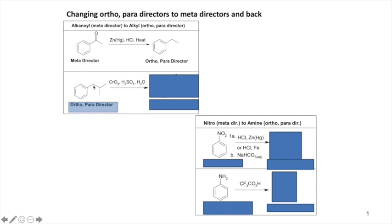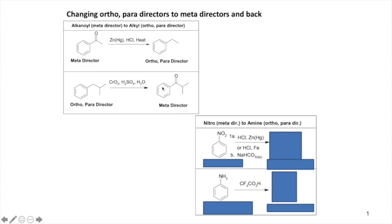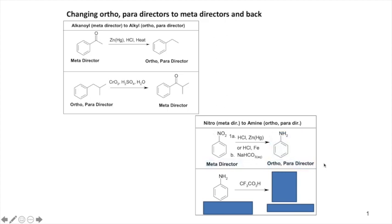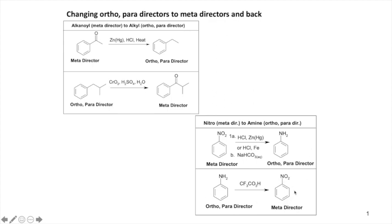You can reverse this: take the alkyl chain (ortho/para director, weak activator) and apply Jones oxidation to get the carbonyl back, making it a meta-director again. Similarly, a nitro group (meta-director) can be reduced using zinc amalgam and HCl, then sodium bicarbonate to deprotonate the amine, giving an ortho/para director. You can then re-oxidize the amine to restore the nitro group. These four reactions will be provided on the exam.